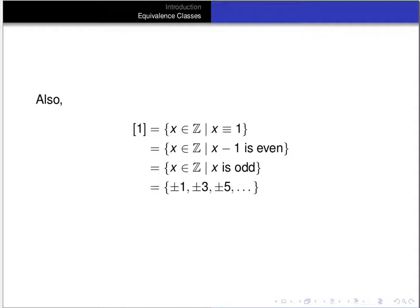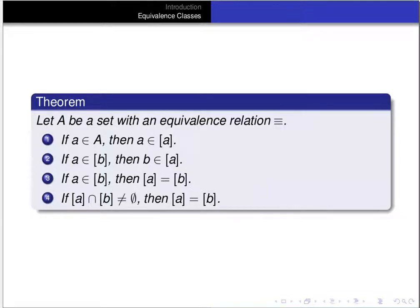The next theorem will save you a lot of work because it shows how you can get from one equivalence class to another easily. Let A be a set with an equivalence relation. The theorem states: first, for any element A in the set A, A is a member of its own equivalence class. Second, if A is a member of the equivalence class of B, then B is a member of the equivalence class of A. Third, if A is a member of the equivalence class of B, then the equivalence class of A equals the equivalence class of B. Finally, if two equivalence classes have non-empty intersection, then they are actually equal.